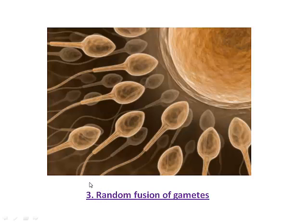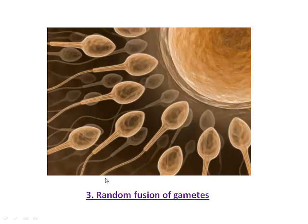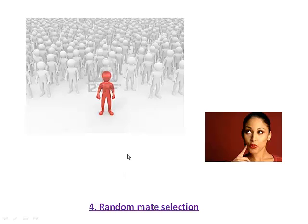After meiosis, another way to introduce variation is which particular gamete actually fertilises the egg — the random fusion of gametes. Any one of these sperm may be the lucky one that gets into the egg, and that again introduces a huge amount of variation. That's why two sisters don't look the same — because dad is making billions of different kinds of sperm. And lastly, mate selection: which two individuals end up mating together.